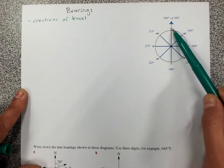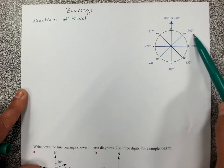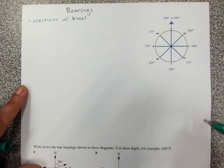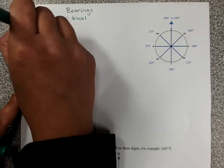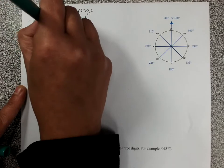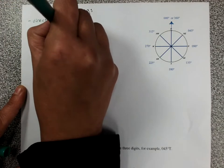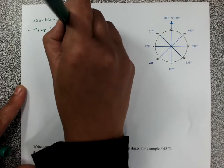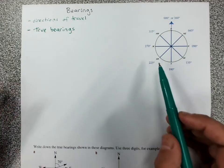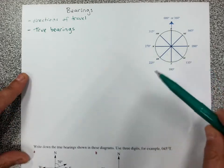And we can also give those directions as true bearings. So we're doing the true bearings and they're really important in trigonometry because we use them for navigation and working out how far we need to travel or how far we have traveled.